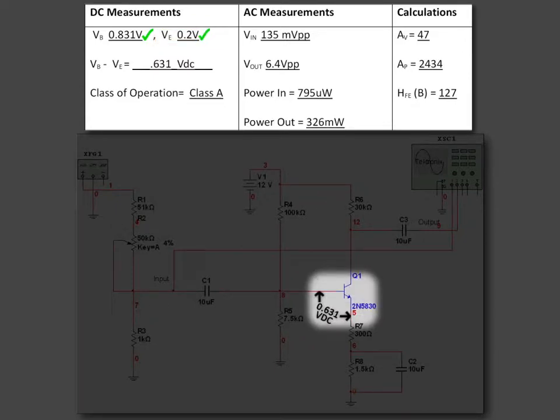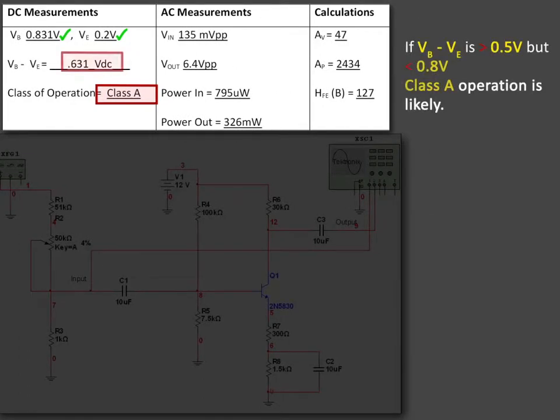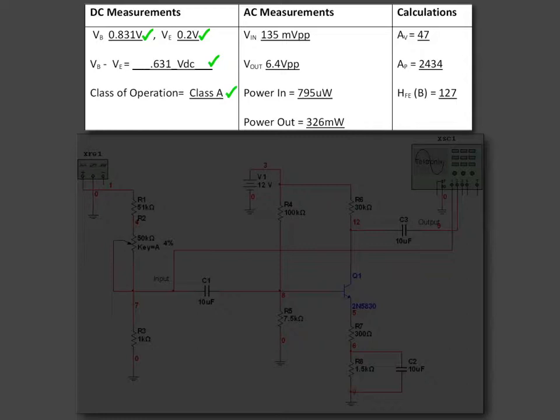And if we subtract those two, that will give us the potential difference between the base and the emitter, which tells us what class of operation we were in. If it's between around 0.5 to 0.85 volts, somewhere in the middle, then there's a good chance it's going to be a class A operation. So we figured it was class A.